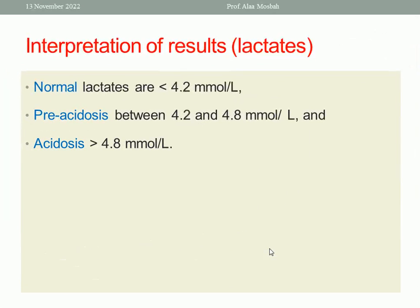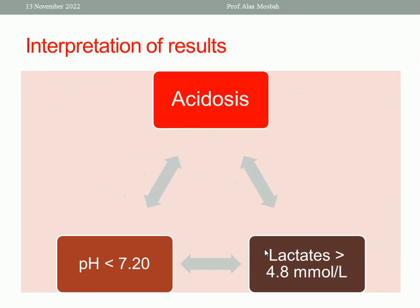What about lactate? Normal lactate is less than 4.2 mmol per liter. What is the borderline, or pre-acidosis? Lactate is between 4.2 and 4.8 mmol per liter. And what is acidosis, or an abnormal result? Lactate more than 4.8 mmol per liter. As you see in this figure, we can say acidosis if we find pH less than 7.20 or lactate more than 4.8 mmol per liter.